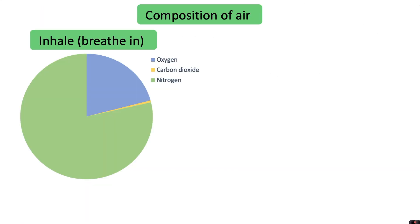Finally, we'll look at how the composition of air changes from when you inhale to when you exhale. When we inhale, the composition of air is approximately 79% nitrogen, 21% oxygen, and just 0.04% carbon dioxide. In case you're wondering, because we round the numbers, you'll find that sometimes the composition goes slightly over 100% when we're not completely accurate.